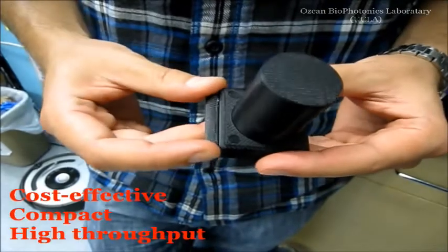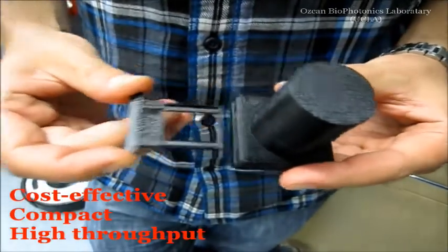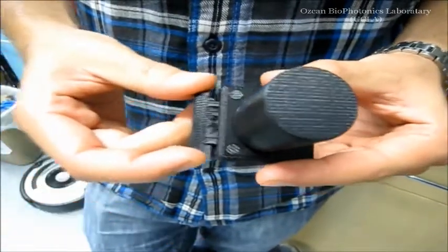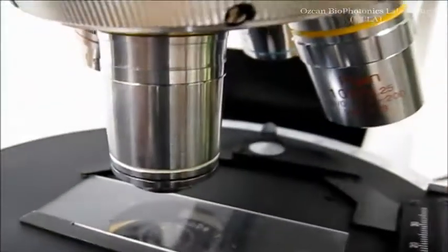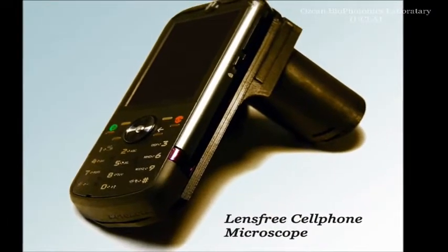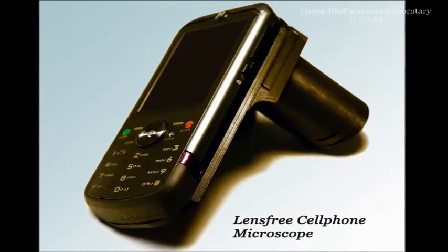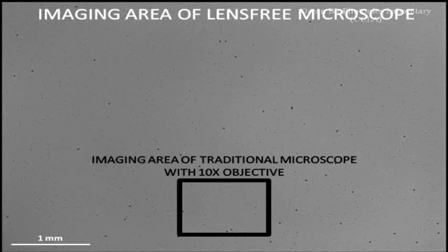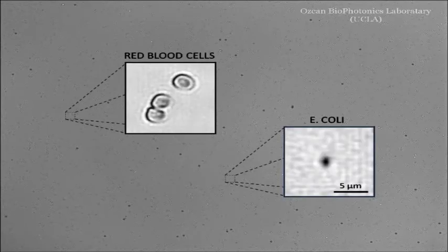It's a silicon chip that is maybe a half a centimeter by half a centimeter, and it has so many small pixels that are sensitive to light — that's how you record images. The CMOS industry has done a fantastic job of making these cell phone cameras so advanced, with so many megapixels and such small pixel sizes.